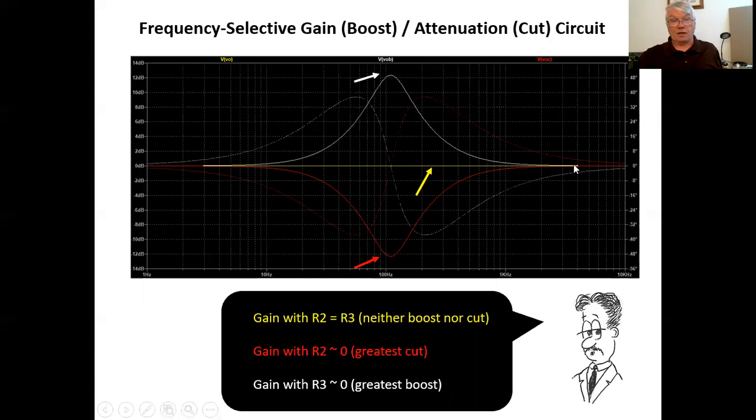And here is a simulation of that circuit. As I was on the previous slide, the yellow trace here is the gain with r two equals r three neither boost nor cut and you see it's zero decibels. That's unity gain. The red trace is gain with r two equals zero, which is approximately zero, which is the greatest cut a gain decrease at the peak negative peak here of about minus 12 decibels. And with r three approximately zero, which gives us the greatest boost, we get approximately 12 decibels gain. Works. It's beautiful. Fits the theory.